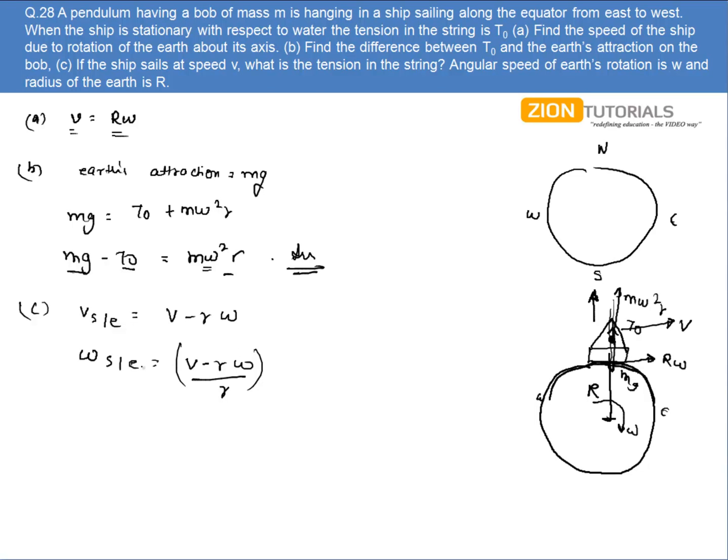So I will calculate the actual omega with which the ship is rotating now, and that will be given by (v minus R omega) by R. Now again applying the condition of equilibrium: Mg equals T₀ plus M omega² R. This was the initial condition when it was rotating with an omega.